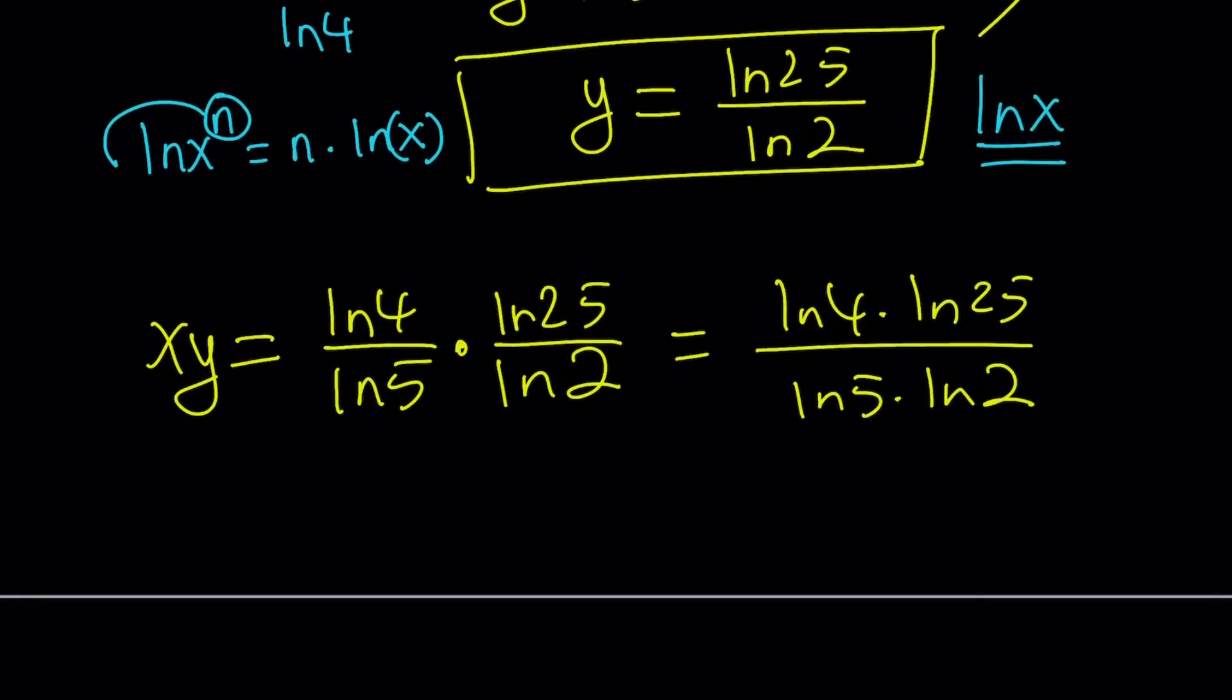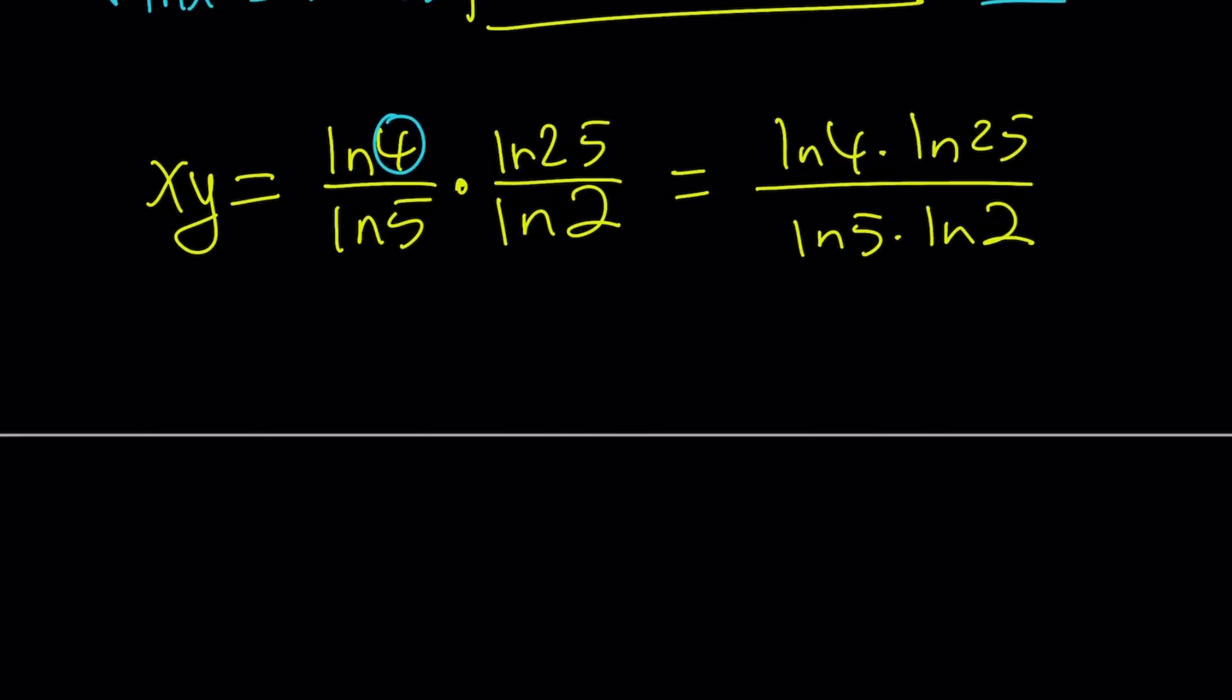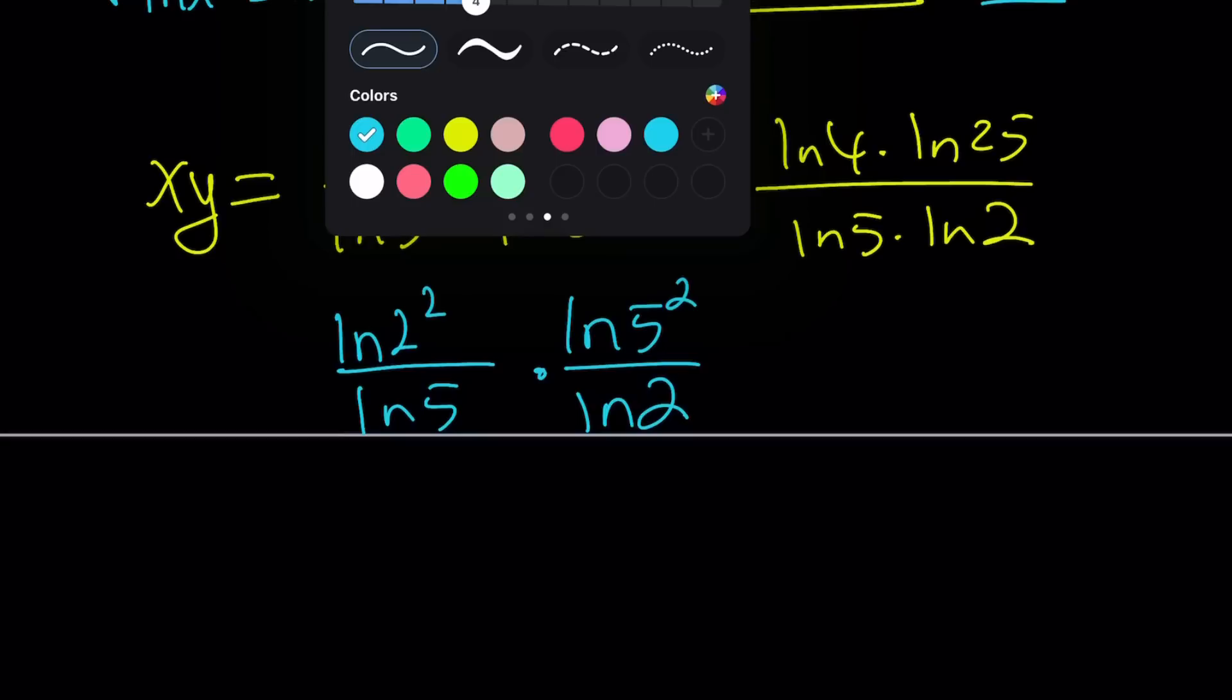So how do you simplify this? We're going to use the power rule. 4 can be written as 2 squared. And 25 can be written as 5 squared. Great. So we have to basically bring everything down to its prime factors. And then we're going to move the powers and then go from there.